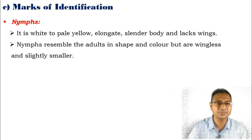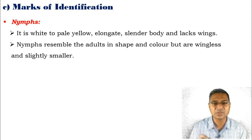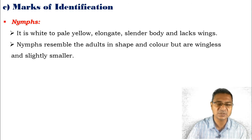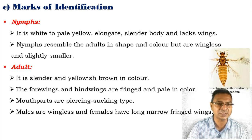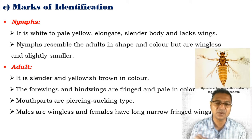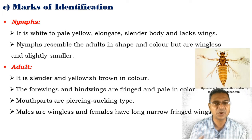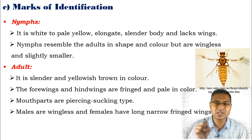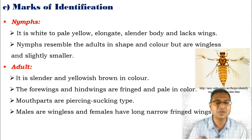The marks of identification: first, the nymphs. They are white to pale yellow, elongate, slender body, and lack wings. Nymphs resemble adults in shape and color pattern, but are wingless and slightly smaller, as well as different in reproductive pattern. The adult is slender and yellowish brown in color. The forewings and hindwings are fringed and pale in color. The mouthparts are specially modified in the form of long elongated stylets, due to which they puncture the plant tissue and suck the plant sap — piercing and sucking type mouthparts. Males are wingless, while females have long narrow fringed wings.